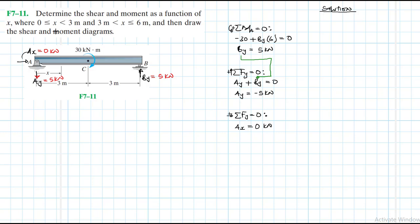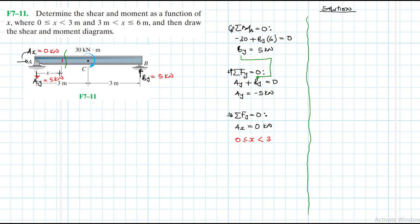In this particular case we are going to make a section. Mind you, we are dealing with two intervals, so we need to make a section here and also later on come and make a section in the second interval. Let's call this the first interval, where x is equal to 0 to just the left of C, which is the first interval.